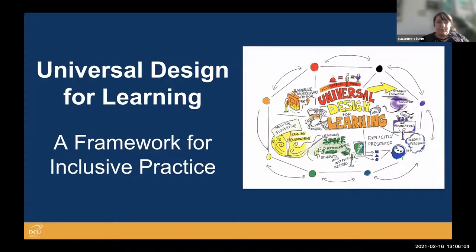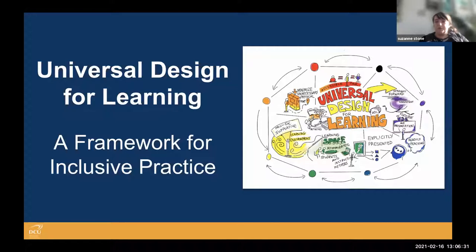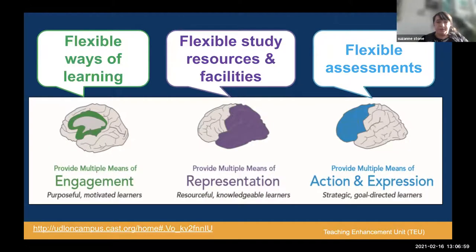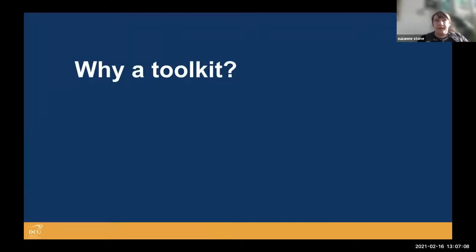Most of you here today are probably familiar with Universal Design for Learning, but for those who are not, I'd direct you to the toolkit where we have a deeper explanation of the framework. Essentially it's a framework for inclusive practice — designing learning for everybody, not just those with special needs. The framework is supported by three key principles: multiple means of engagement, or flexible ways of learning; multiple means of representation, or flexible study resources; and multiple means of action and expression, or flexible assessments.